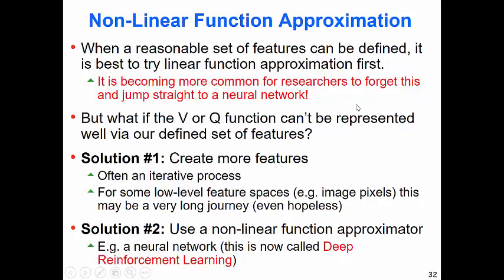When you're not able to get good performance with a linear function approximator, one thing to do is create more features. It's always an iterative process: define some features, see the performance, see the behavior, and try to guess what information they might be missing. In that Wargis problem example, one piece of missing information was that agents didn't know who they were currently attacking and had no memory — you'd see agents going back and forth. So we added a feature saying who they're attacking. But sometimes that won't work.